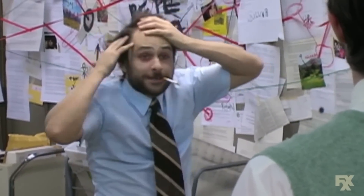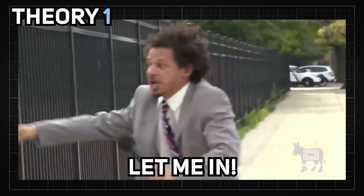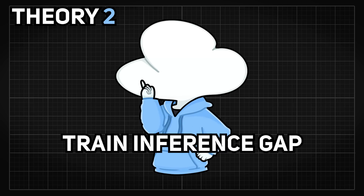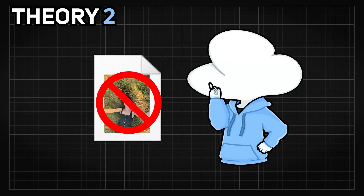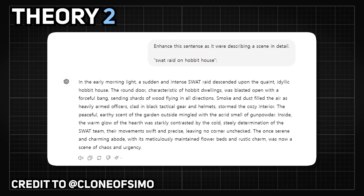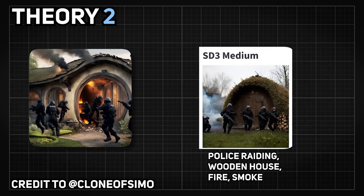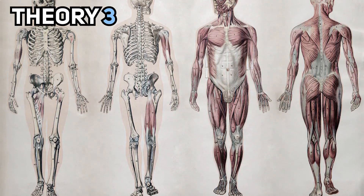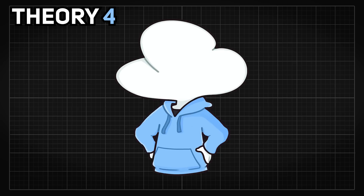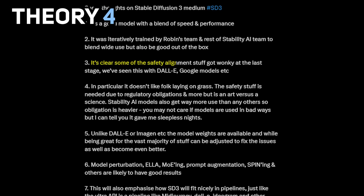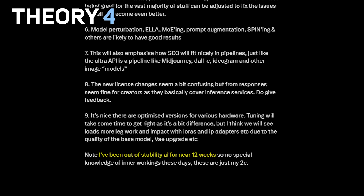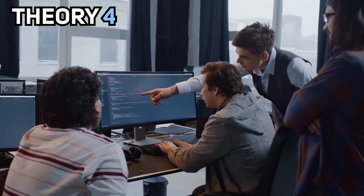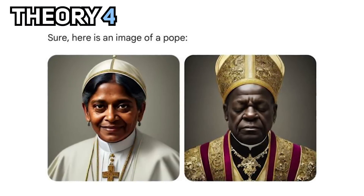Here are some other theories as to why SD3 Medium sucks. First, it is intentional from them to gatekeep the quality between open source and their paid API. Second, it is the chain inference gap — meaning what the model is trained on is not what people are using, as using captions generated from ChatGPT often gives far better results than the brief captions people are used to in other versions of Stable Diffusion. Third, it might be a lack of good data in general, as anatomy-related images were completely removed from the dataset. Fourth, the safety team got one key before the release of the 2B, which is what Emad said himself even though he has not been involved for over 12 weeks — they could be modifying weights directly or adding some funny stuff like what the red teaming did to Gemini with the forced diversity.